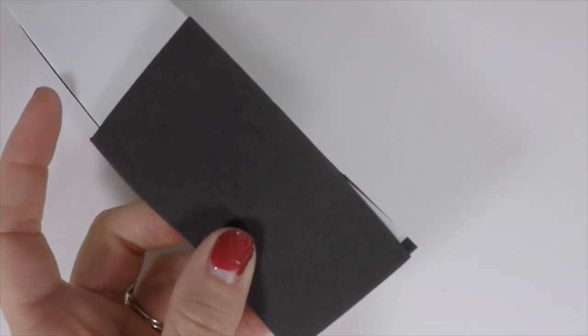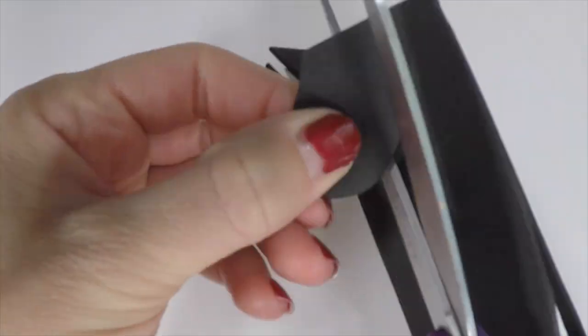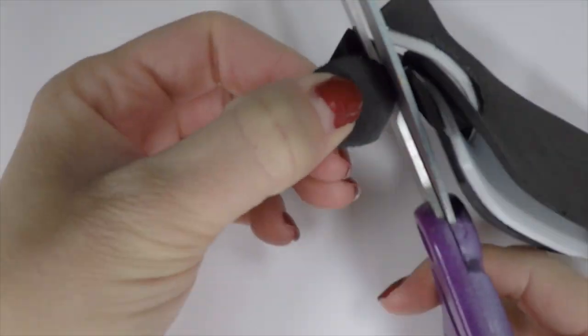For the Oreo cookie, you're gonna put black, white, black craft foam together, cut out a circle, and glue it together.